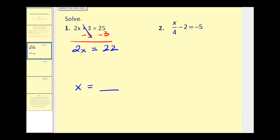On the right side we'd have 25 - 3 which is equal to 22. So now we have one more step. This two was attached to the variable by multiplication, and to undo multiplication we perform the opposite operation which would be division. So we'll divide both sides by two. Two divided by two equals one, one times x would be x, and then 22 divided by 2 would be 11, which is our solution.